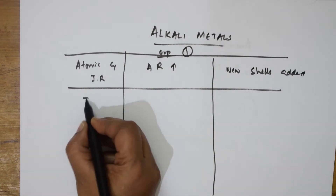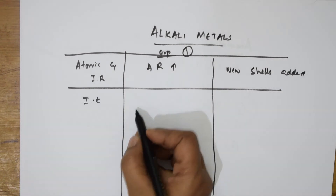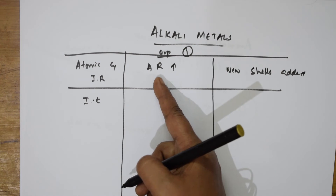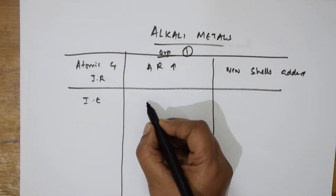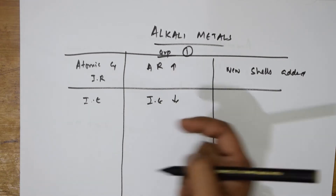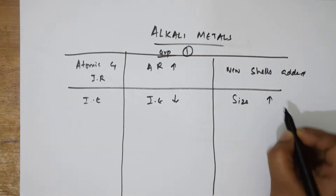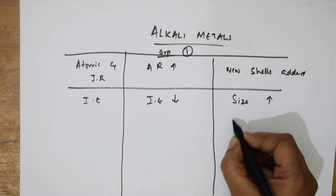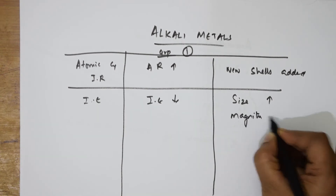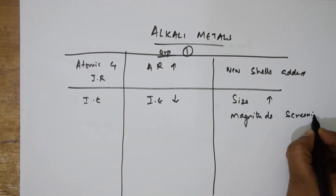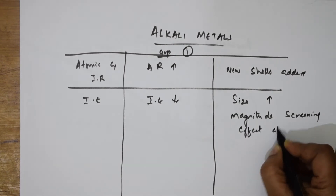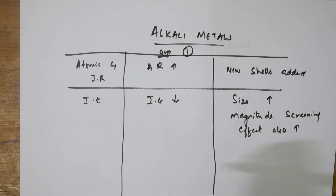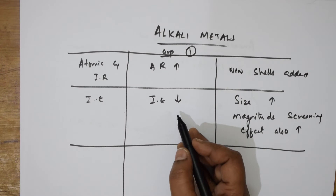When speaking about ionization enthalpy, as atomic radii increases down the group, ionization enthalpy decreases. Why? Because as size increases, the magnitude of screening effect also increases. The number of shells increases, making it easier to remove the electron. That is why ionization enthalpy decreases down the group.